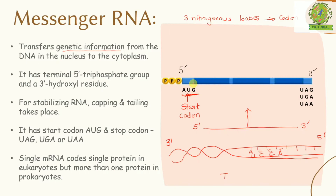When mRNA has only the start codon and stop codon, it is very unstable. At the terminal 5' end, a triphosphate group is present, and at the terminal 3' end, a hydroxyl residue (OH group) is present.